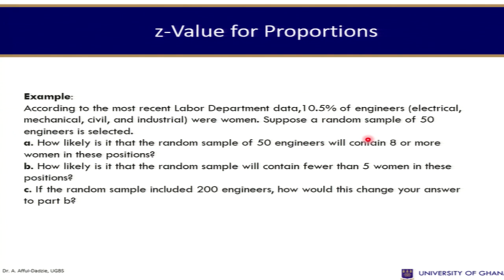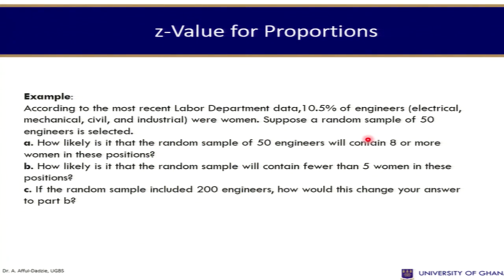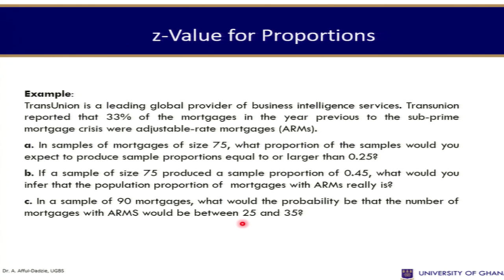Another example to try: according to the most recent labor department data, 10.5% of engineers — mechanical, civil, and industrial — were women. Suppose a random sample of 50 engineers is selected. How likely is it that the sample would contain 8 or more women? How likely is it to contain fewer than 5 women? If the sample included 200 engineers, how would this change your answer? You could also try the second example shown on your screen. This brings us to the end of session 7. Thank you very much.